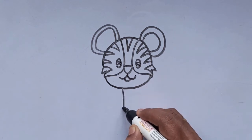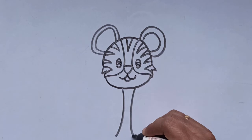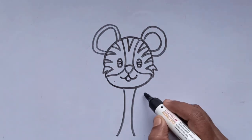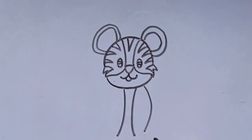Let's draw the body now. Draw two curved lines. Add one more line. Maintain the distance. Draw the paw as shown here.